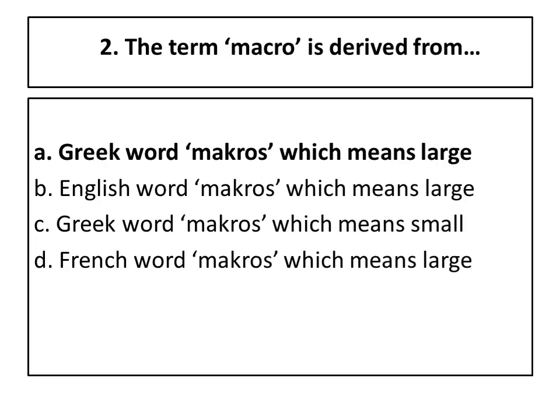Second question: the term 'macro' is derived from where? The four options are: a Greek word, a word macroeconomics, Greek word macro which means small, and French word macro. The right answer is Greek word macro which means large.